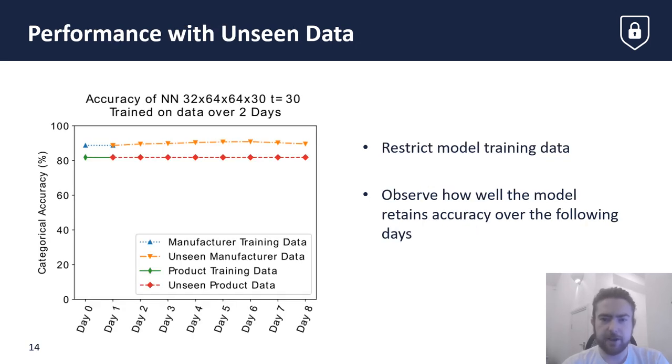A challenge with IoT device identification is the constantly updating behavior of IoT devices. To determine how well our method retained accuracy over longer timescales, we restricted the neural network's training data to only include data gathered over two days. This network was then tested on unseen data gathered over the following week. We found that the model retains accuracy for the following week. By only considering the SLD, we build a generalized model of a device's DNS activity, which is likely more robust to minor changes over time.